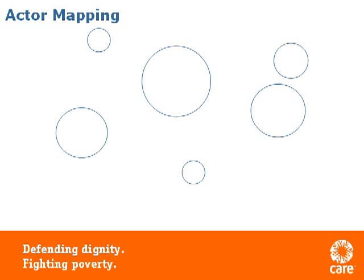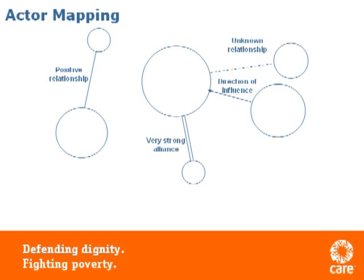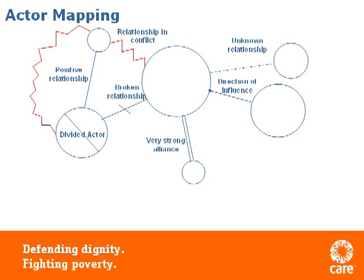So now we can begin mapping the specific relationships. A straight line between two actors represents a positive relationship. A double line would represent a stronger alliance. A line with an arrow shows the direction of influence. A dotted line represents an unknown relationship, and this would represent a broken relationship. And finally, here's a relationship in conflict. However, in most cases, it's unlikely that the actor groups you have chosen are completely homogenous, being comprised themselves of particular groupings and factions. This can be shown by a line through that actor, which will then allow you to mark out the different relations actors may have with the same party.